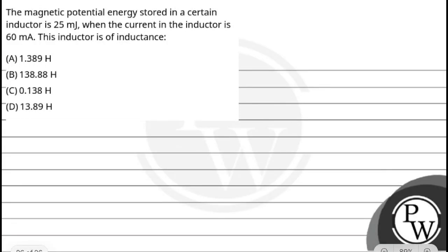Hello, let's see this question. The magnetic potential energy stored in a certain inductor is 25 millijoules when the current in the inductor is 60 milliamperes. This inductor is of inductance, and our options